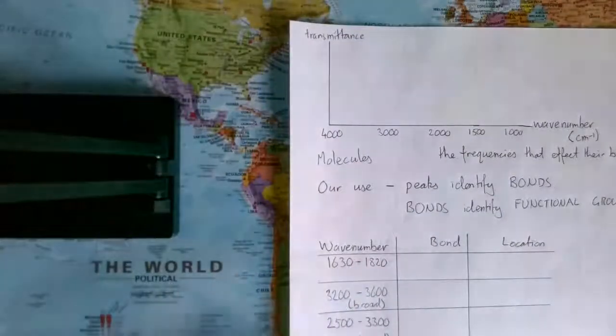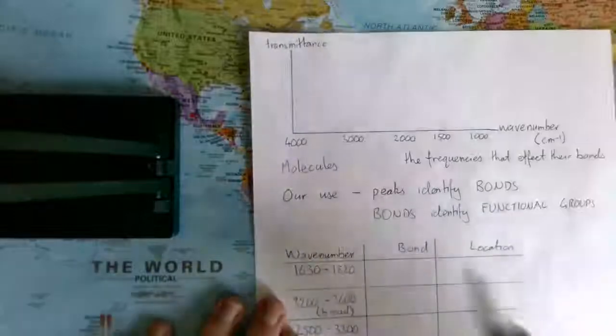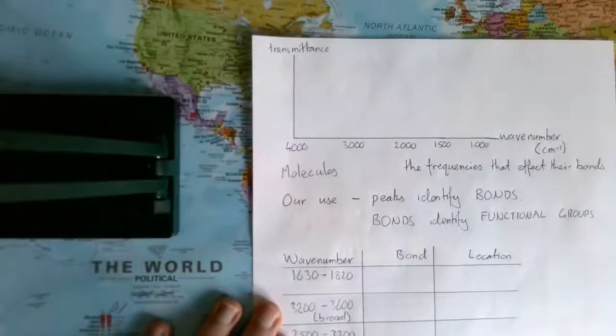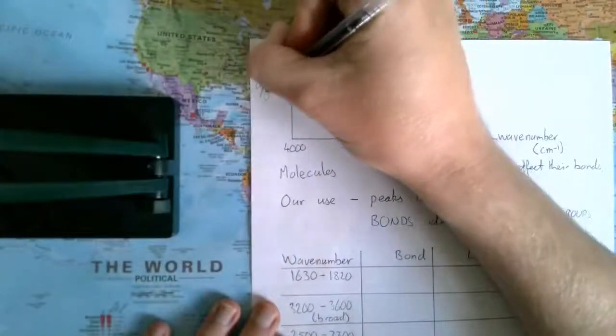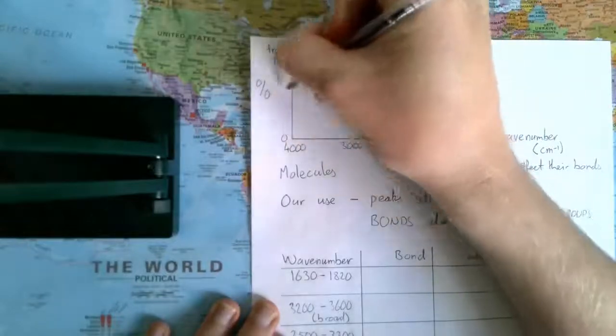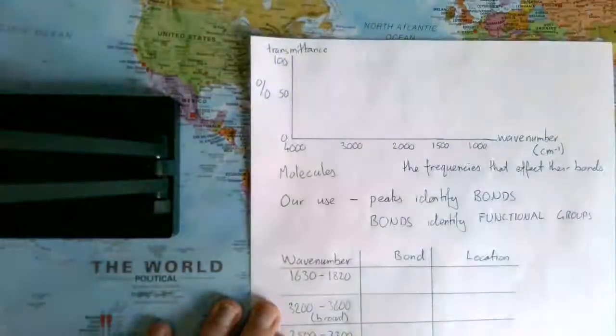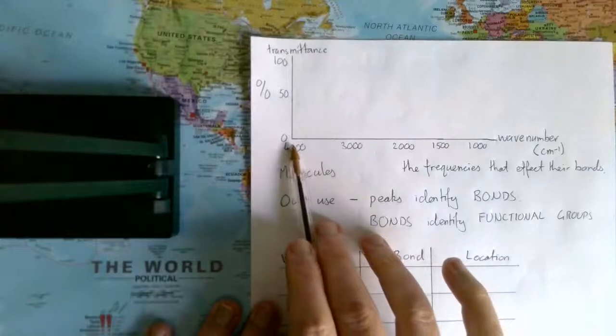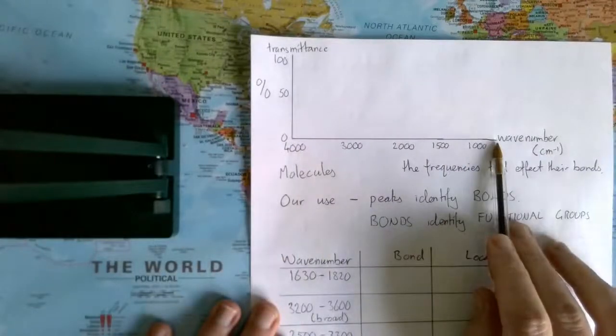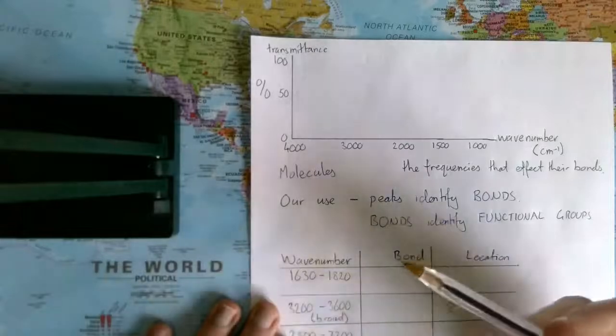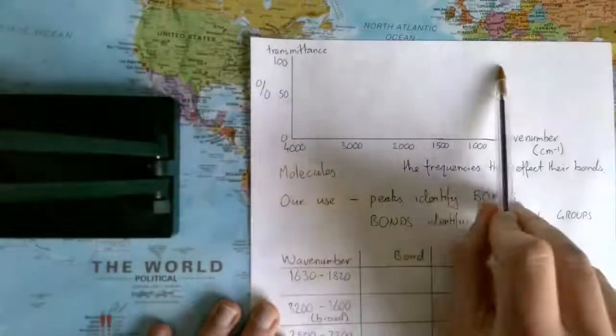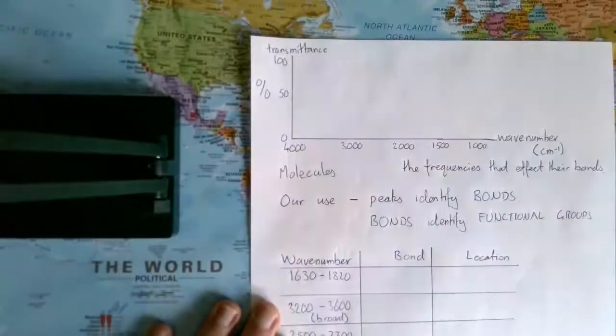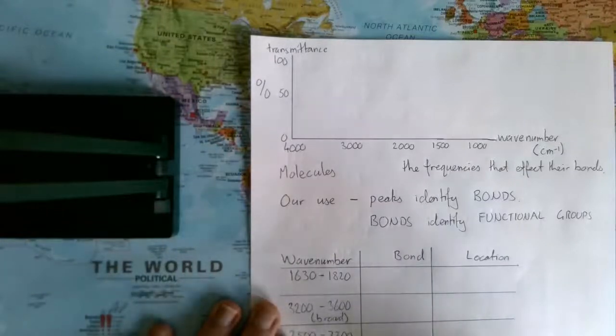So what are the actual spectra we're going to see? They will have along the x-axis wavenumber, which we've just discussed, and the y-axis is going to be transmittance. The units are percentage, with 100 at the top and 0. Your sample is placed in a machine which will emit a whole range of different frequencies of infrared radiation. If you put nothing in there, it would be a straight line at 100%, where nothing would be absorbed. But we're going to put a sample in place.